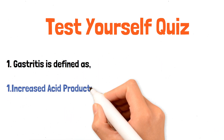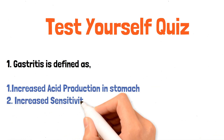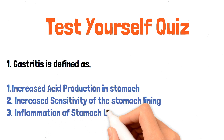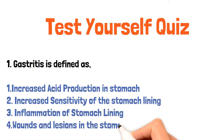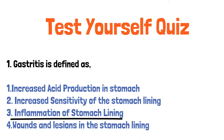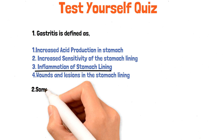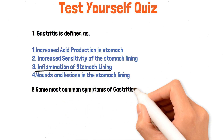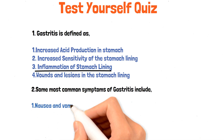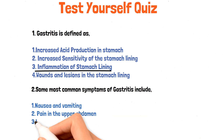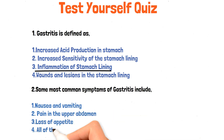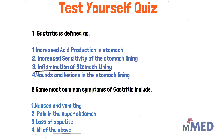Let's test yourself with two questions. Question one: gastritis is defined as — increased acid production in the stomach, increased sensitivity of the stomach lining, inflammation of the stomach lining, or wounds and lesions in the stomach lining? The answer is number three: inflammation of the stomach lining. Question two: the most common symptoms of gastritis include — nausea and vomiting, pain in the upper abdomen, loss of appetite, or all of the above? The answer is four: all of the above are correct. That's it for now — don't forget to check out our next video on chronic gastritis.